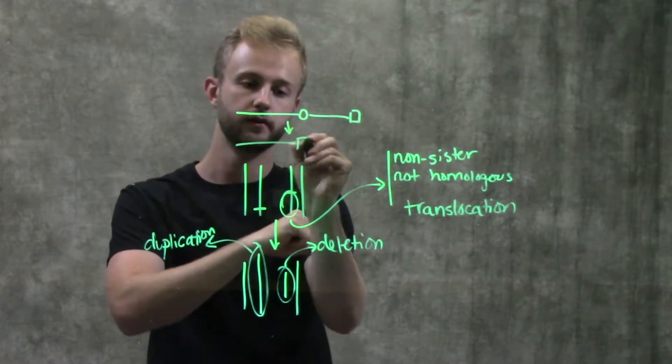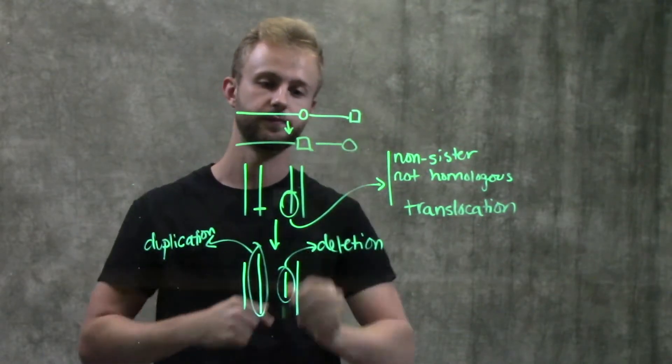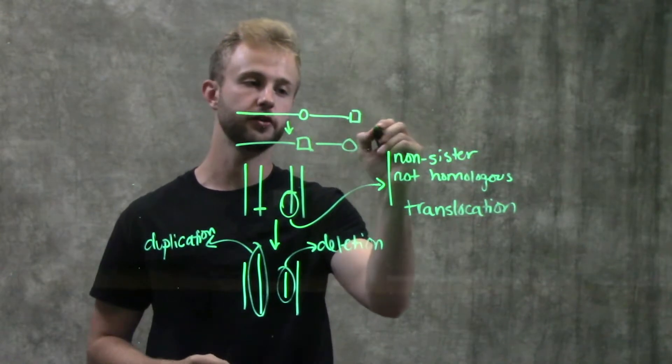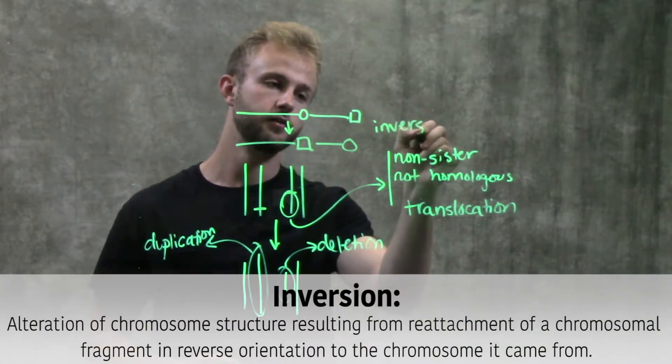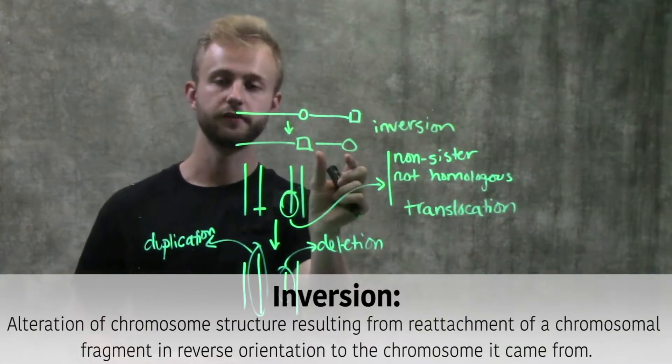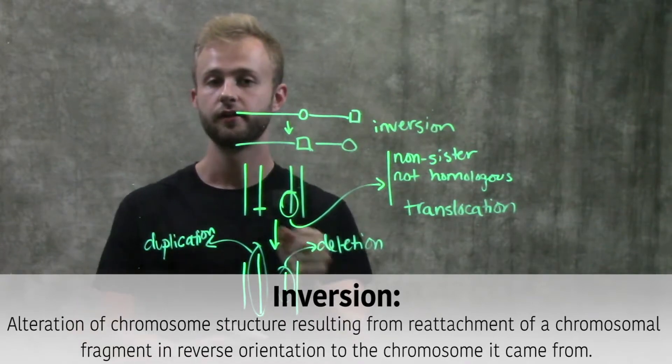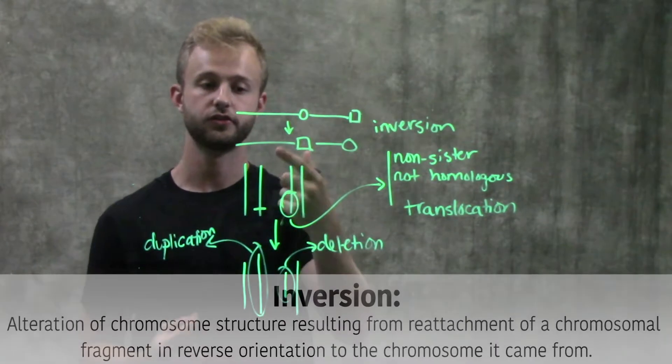So now it would look like this. This is called an inversion, just because this region of the chromosome has been detached, turned around, and then reattached to this chromosome.